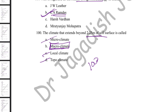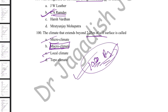That covers 100 MCQs from different sectors of agrometeorology and how they relate to crop production. If you have any doubts about micro-meteorology, ask in the comment section. Keep studying!